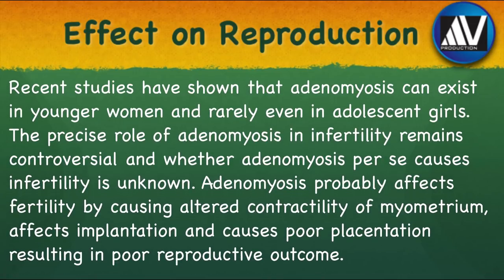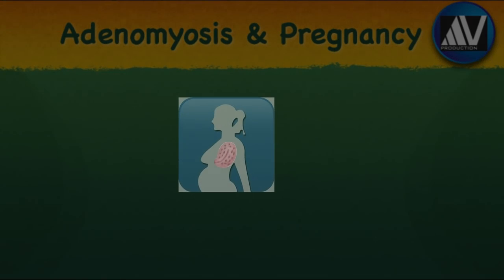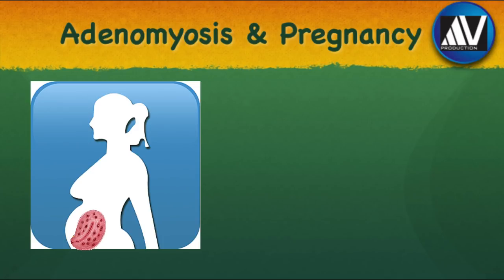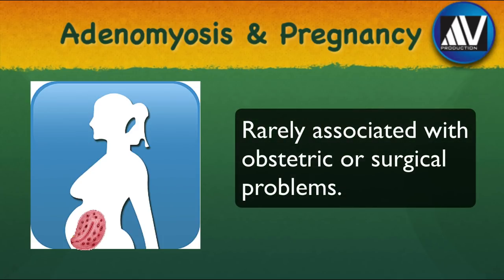What is the effect of adenomyosis on reproduction? Although considered a disease of multiparity, recent studies have shown that adenomyosis can exist in younger women and rarely even in adolescent girls. The precise role of adenomyosis in infertility remains controversial, and whether adenomyosis per se causes infertility is unknown. Adenomyosis probably affects fertility by causing altered contractility of the myometrium, affects implantation, and causes poor vascularization, resulting in poor reproductive outcome. Adenomyosis is a frequent finding in pregnancy but is rarely associated with obstetric or surgical problems.